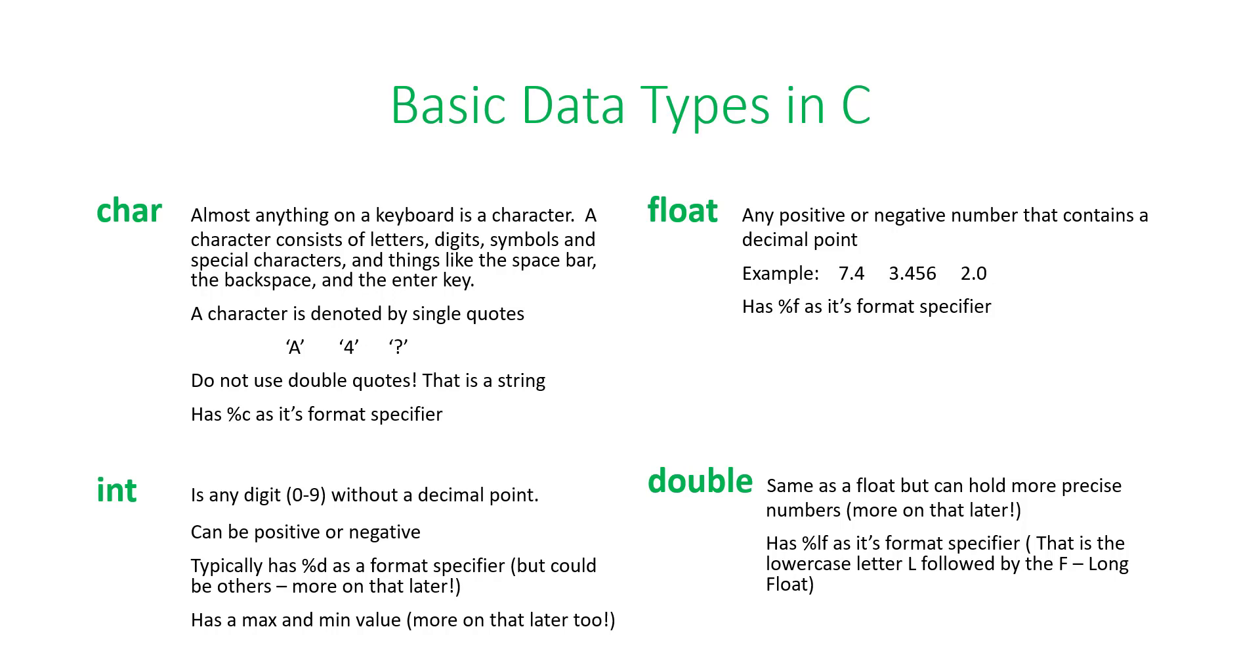Talking about integers for a second. Integer is any digit, 0 through 9, that does not contain a decimal point. So, if you have 7.0, yes, your math teacher will tell you that's an integer because it's a whole number. However, in a computer world, it is not. Because it contains that decimal point, the computer will not see it as an integer. So, an integer doesn't have to be a single digit, just a single number, positive or negative. So, you could have 227. As long as there's no decimal point in it, it will be an integer.